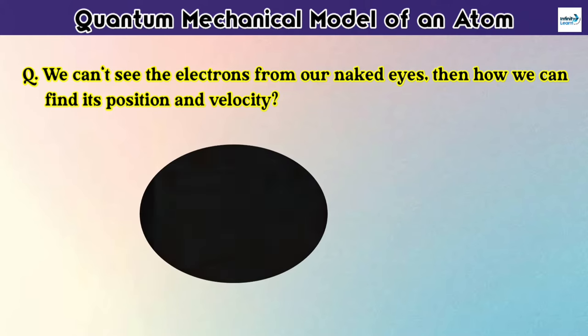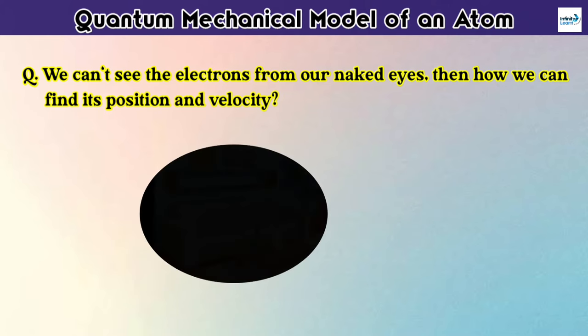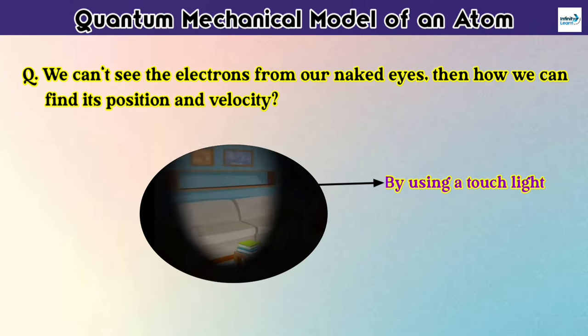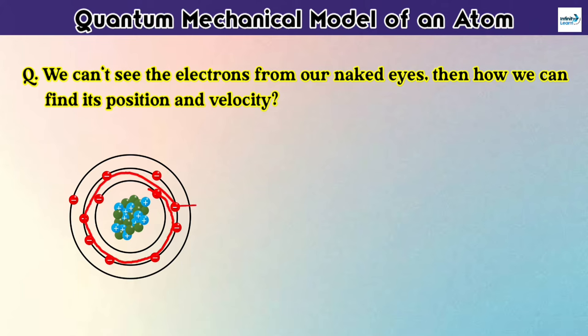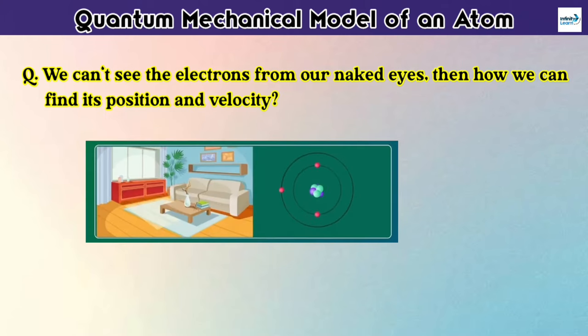So for example, during the night time, how can you find the articles in the room? Maybe by using a torch light, right? So in the same way, the electrons which revolve around the nucleus are not visible to our naked eyes. So we can see them by using focused light. But compared to the articles in the room, the electrons are too small. That we cannot find out by using any normal light.